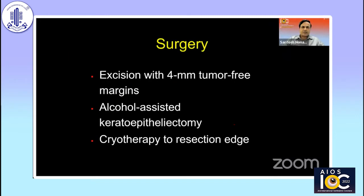Coming to edge and base clearance in surgery, the principle is to excise a tumor with four millimeter clinically clear margins. This means you should have stained the tumor with rose bengal, determined the clinical margins under slit-lamp biomicroscopy, drawn a large picture or used a digital photograph intraoperatively to determine the margins. After giving a block, sometimes the margins become indistinguishable. For the corneal epithelial component, use alcohol-assisted keratoepitheliectomy, and the resection edge should be cryoed twice over.